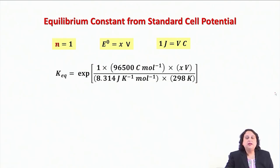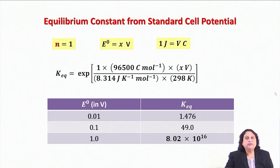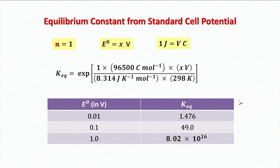Looking at the numerical values: in the left column are different values of E° in volts, and in the right column are the corresponding values of K equilibrium. When E° is very small, K is a small number. As E° increases, K increases rapidly — because E° appears in the exponent, there is an exponential growth in K with increasing E°.